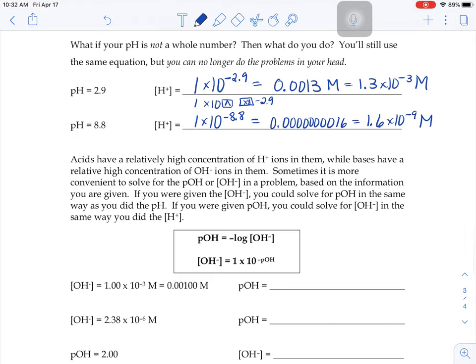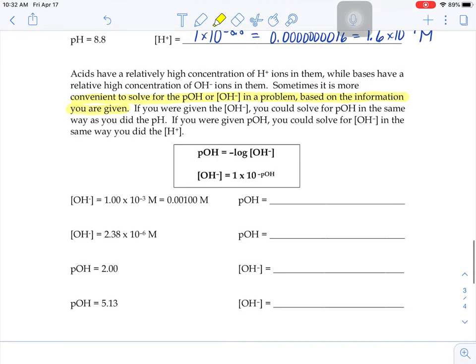Acids have a relatively high concentration of H+ ions in them, and bases have relatively high hydroxide ion concentrations. Sometimes it's more convenient to solve for pOH or OH- in a problem based on the information given. The calculations work the exact same way as pH and H+ do.